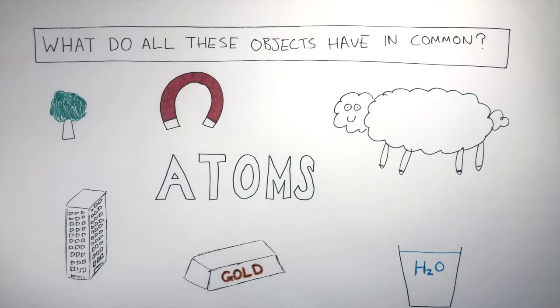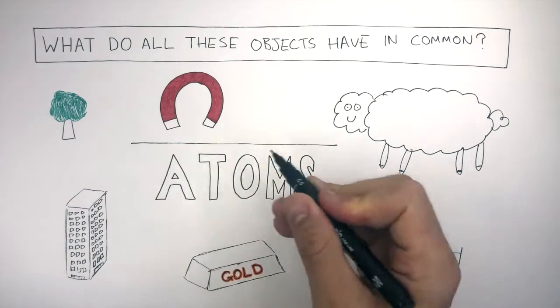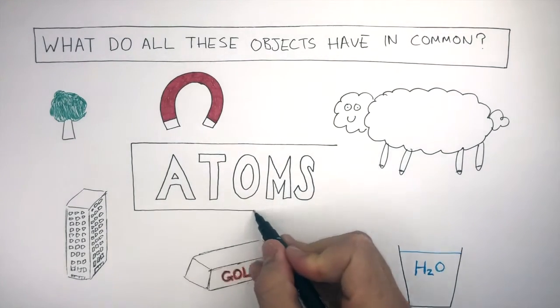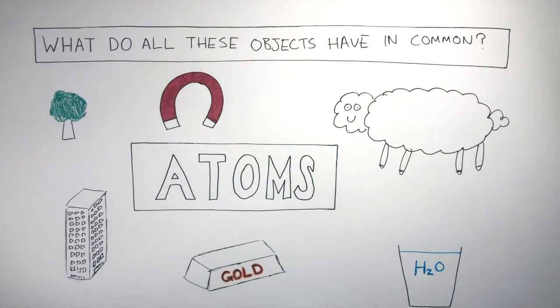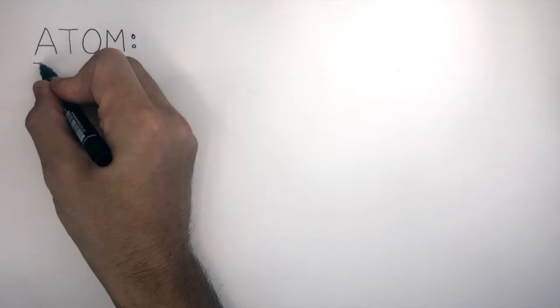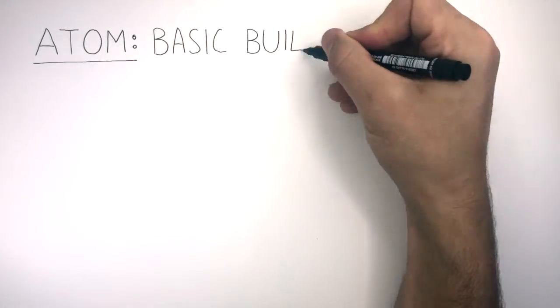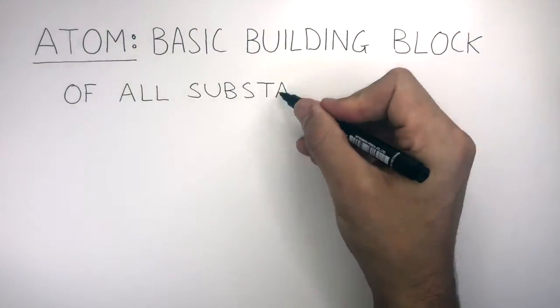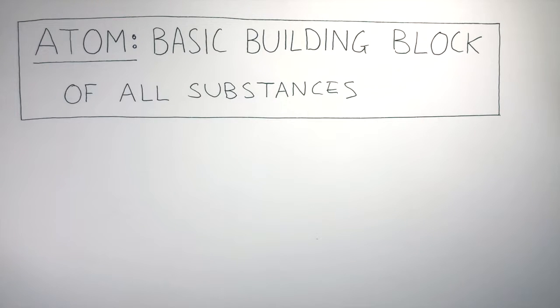All substances are made of atoms. No matter what the substance is, it's made of atoms. The definition of an atom is it's the basic building block of all substances. The same way a brick is the basic building block of a building, an atom is the basic building block of any substance, no matter how complicated that substance may be.